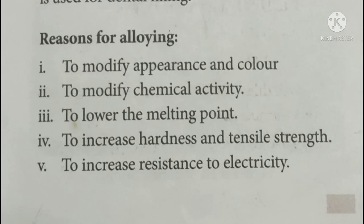The next reason is to modify their chemical activity. Most metals undergo corrosion, so to prevent corrosion the metals are alloyed with other metals. For example, iron is alloyed with other metals like carbon and nickel which prevent it from corrosion. The next reason is to lower the melting point. Normally metals have high melting point, but when they are alloyed with other elements they have a lower melting point compared to the original.